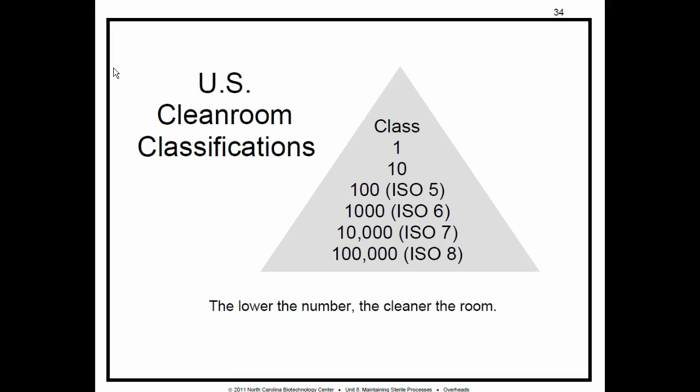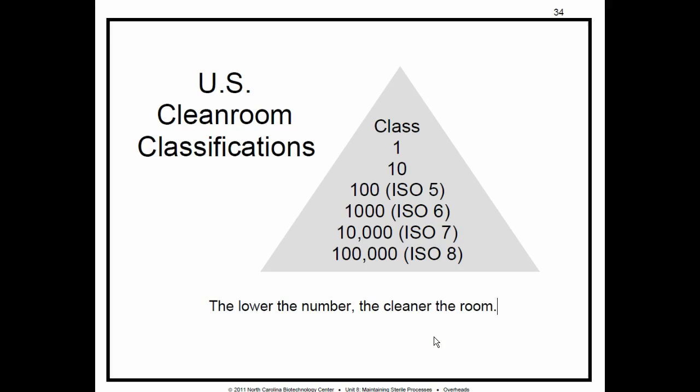In the older U.S. system, which we will use on this test, a Class 100 means it will allow 100 particles — not 101; 99 is okay, but 100 is the maximum number of particles of 0.5 micrometers or larger per cubic foot of air. The newer U.S. standard and international ISO system are also listed in your book. Very important: the lower the number, the cleaner the room. Please know that for your test.